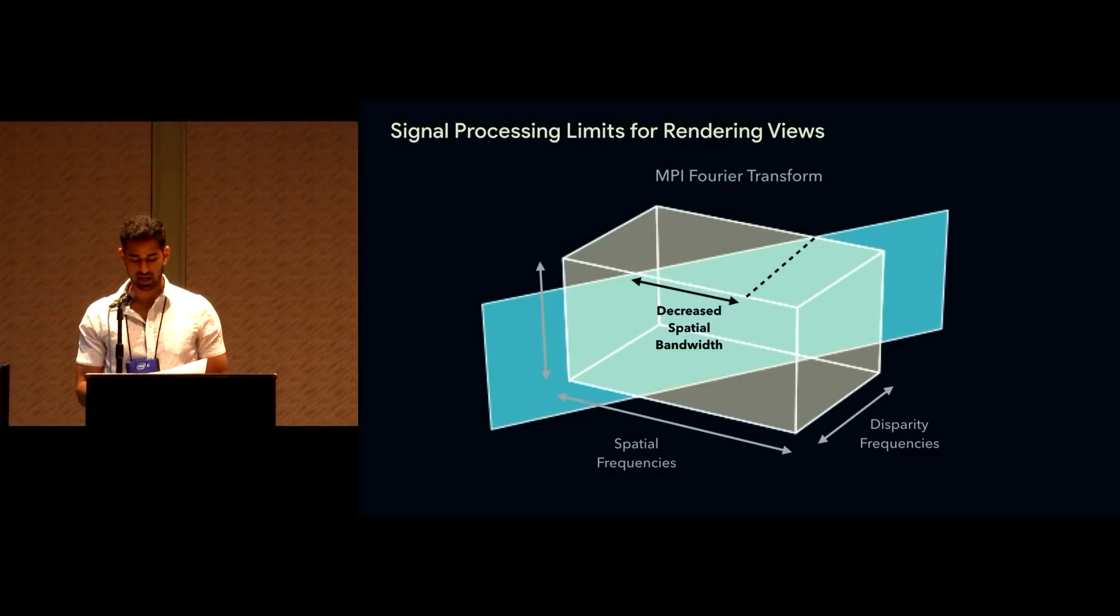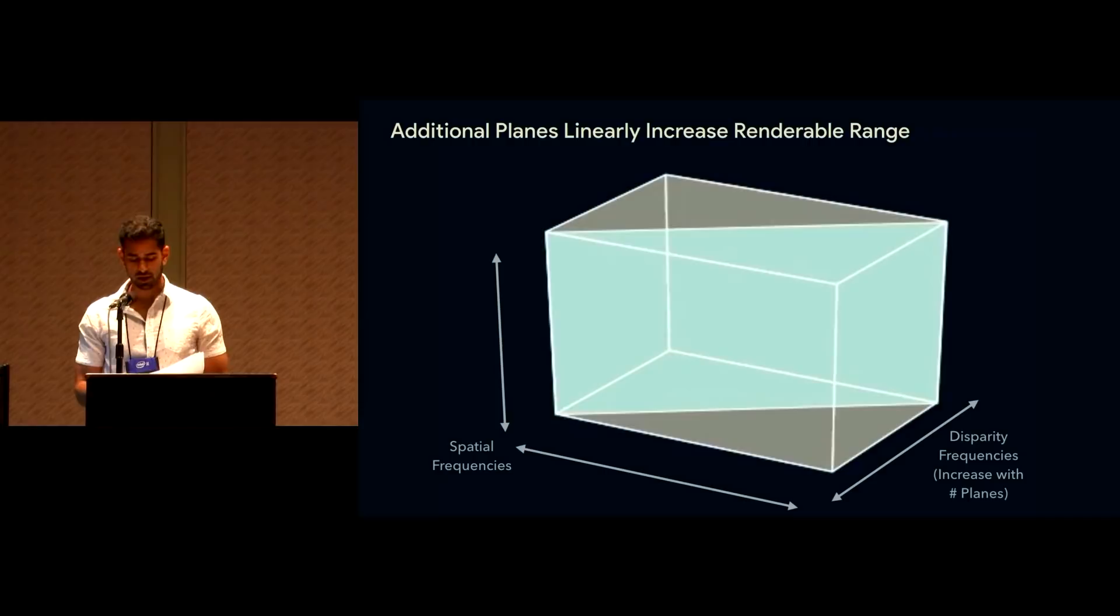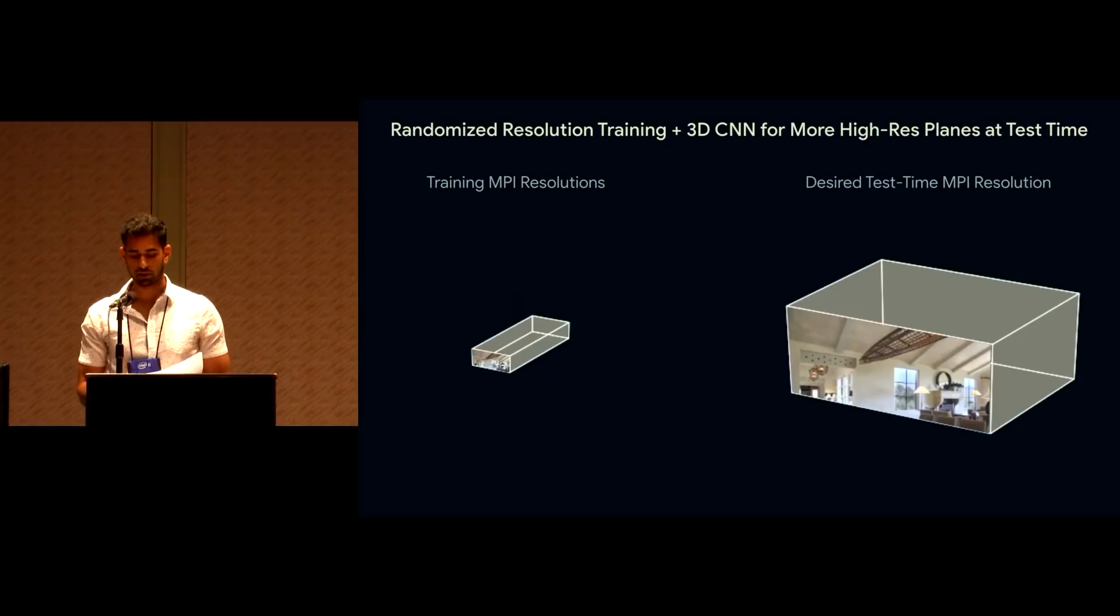There's a limited range of views where the slices contain the full spatial bandwidth, but views outside this range intersect a linearly decreasing range of spatial frequencies. We can see how the rendered view corresponding to this slice contains a smaller range of spatial frequencies and will therefore have a lower resolution than the original MPI. Fortunately, increasing the MPI's disparity frequency support by predicting more planes linearly increases the renderable range, allowing us to render further views corresponding to slices with steeper slopes with full spatial resolution.